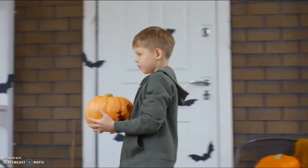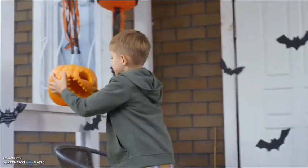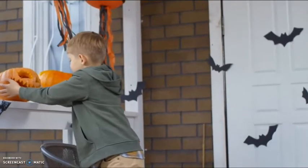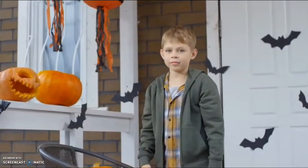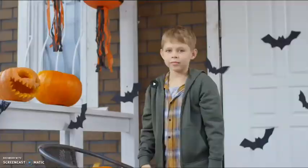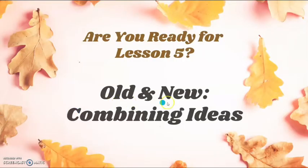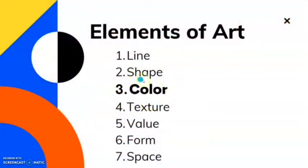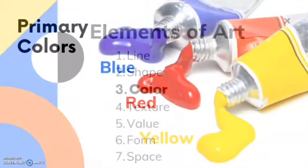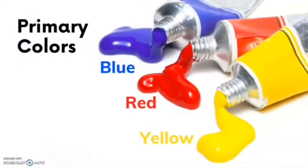What if we put a new spin on an old tradition, like carving pumpkins? What if we carved a different fruit? Could we carve apples? Could we carve some interesting faces into the pumpkins instead of the standard jack-o-lantern? Think of ways that you can combine old and new ideas together. Do you remember when we talked about color in our lesson about the elements of art? We did say something about primary colors in that lesson.